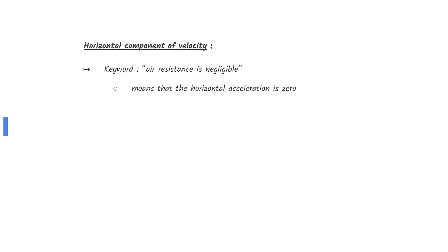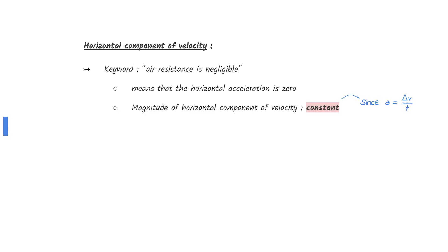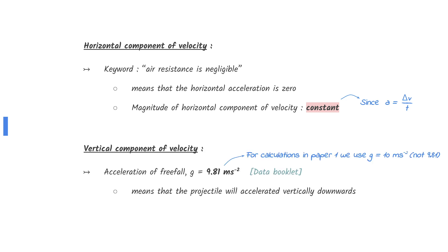Time to know why! First, let's have a look at the horizontal components of velocity. The horizontal acceleration is zero since the air resistance is negligible. This means that the magnitude of horizontal components of velocity is constant.